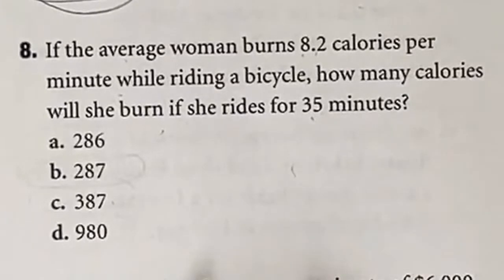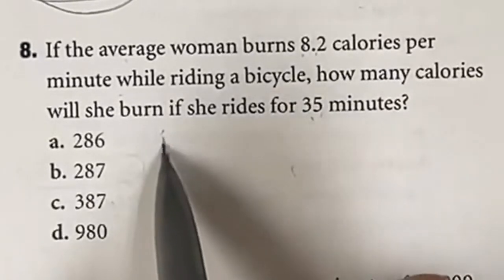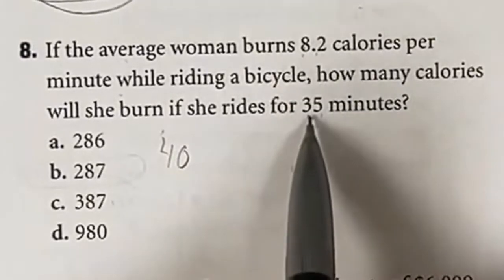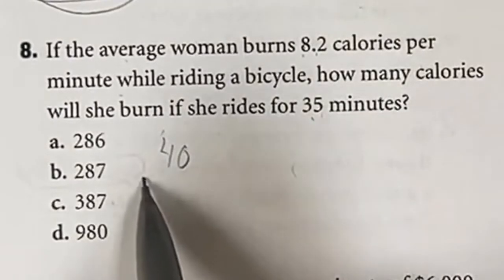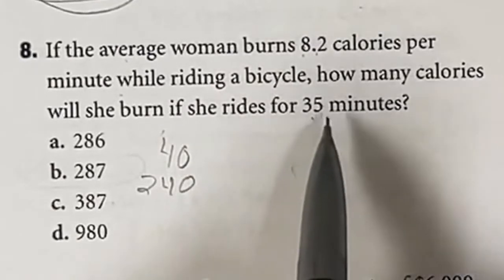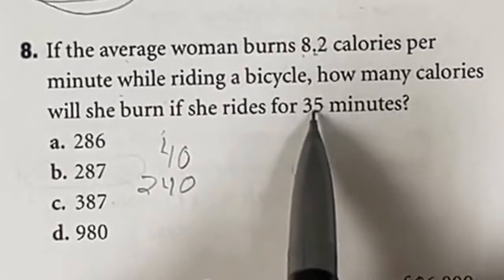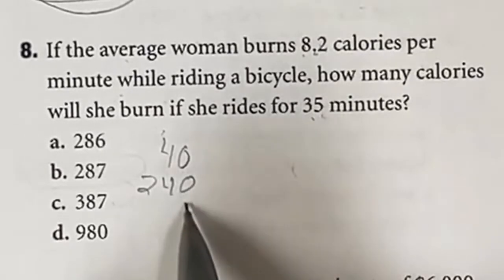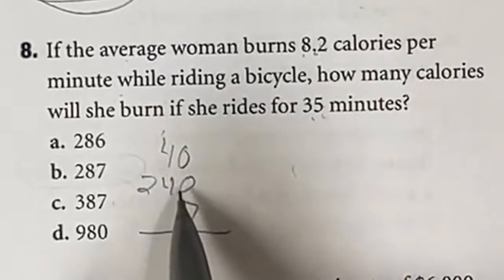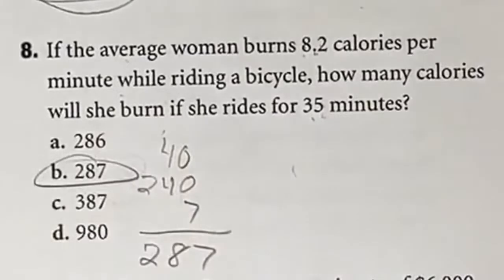For number 8, we essentially have to solve 8.2 times 35 with no calculator. Break it down: 8 times 5 is 40, and 8 times 30 is 240 (because 8 times 3 is 24, then add the 0). Then 0.2 times 35: 2 times 35 is 70, move the decimal over once and you have 7. Adding 40, 240, and 7 together gives 287, which is answer B.